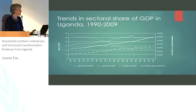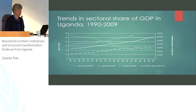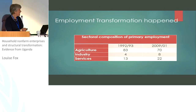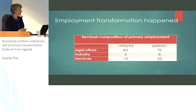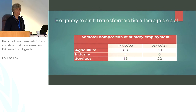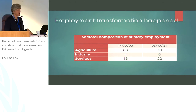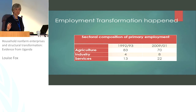Employment transformation also happened but it's not quite as dramatic as the output transformation. This is not a surprise because, as Tim and others have shown, output transformation always leads employment transformation. The absolute number of people working in agriculture did increase over this period even though the share declined. There was solid growth in the share of people working in industry — doubling — and this is not mining, as Uganda did not have an oil sector at this time. This includes construction, a small manufacturing sector, and of course services.